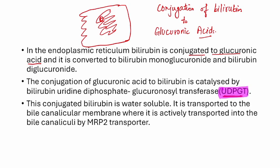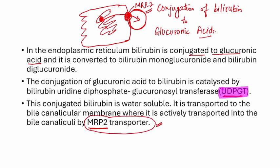This conjugated bilirubin is water-soluble and is transported to the bile canalicular membrane, where it is actively transported into the bile canaliculi by the MRP2 transporter. MRP2 stands for multidrug resistance protein 2. Mutation of this protein can lead to development of certain congenital conditions which cause conjugated hyperbilirubinemia. For example, Crigler-Najjar syndrome and Gilbert syndrome are also related to defects in this pathway.